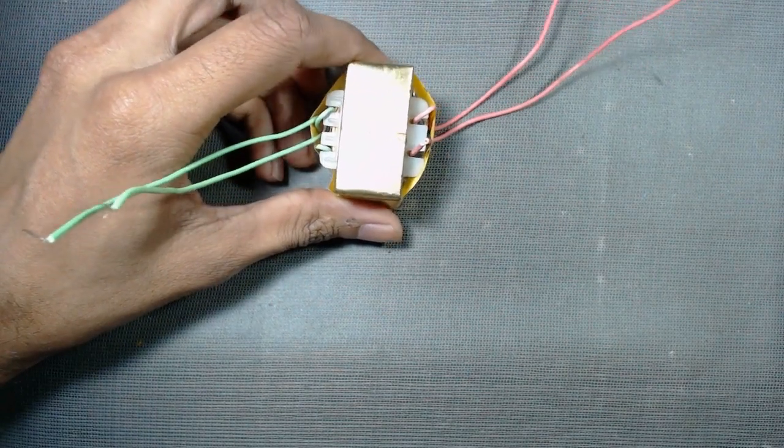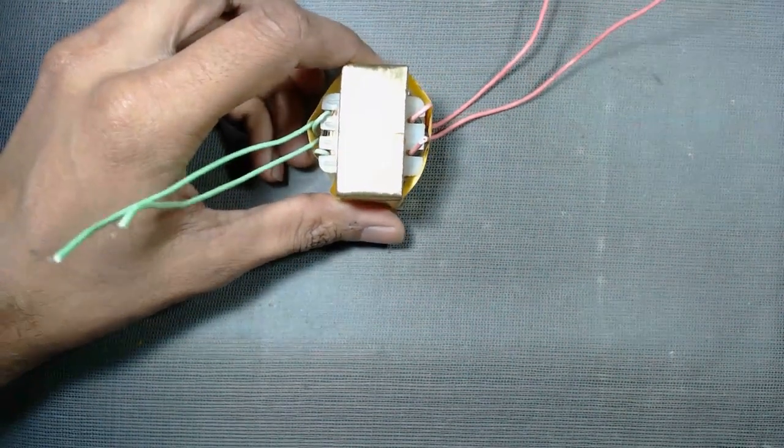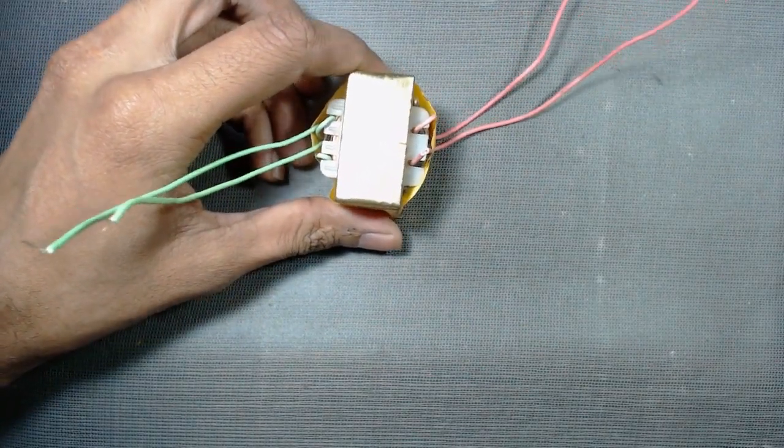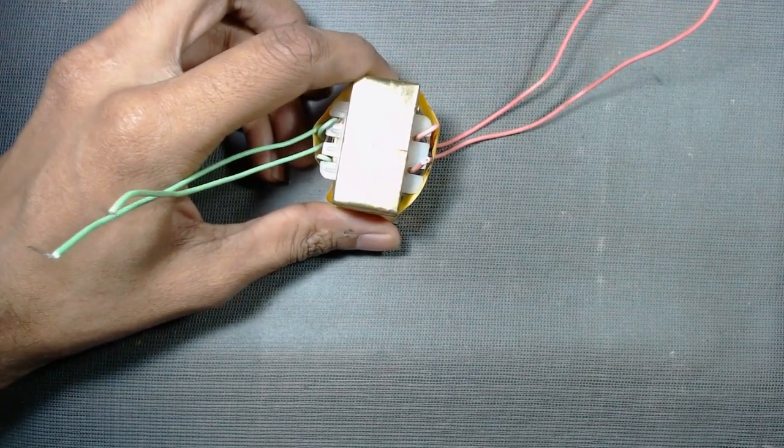But if you don't have a multimeter, then don't worry. In this video, we will show you a very easy trick to identify the primary and secondary side of a transformer.